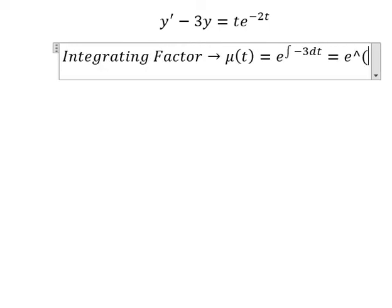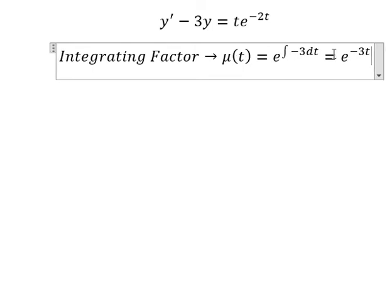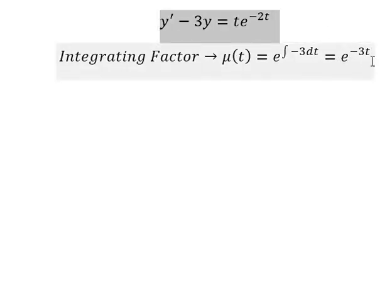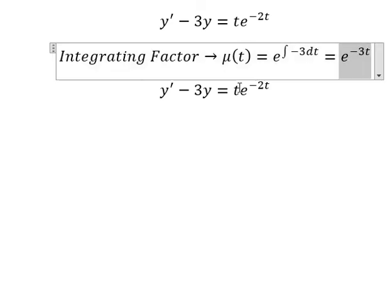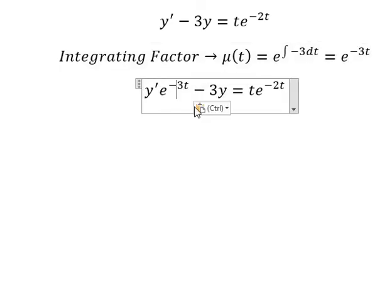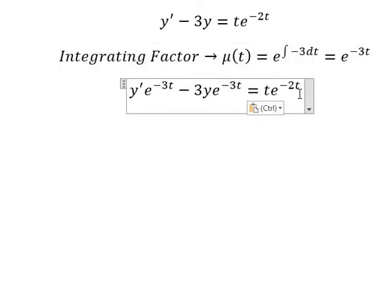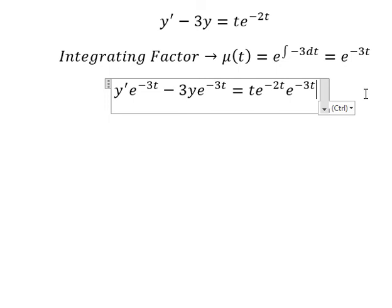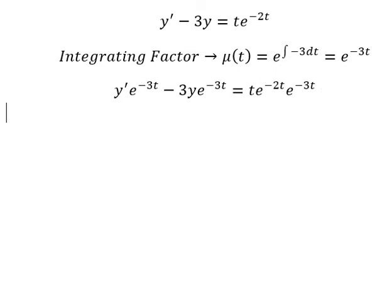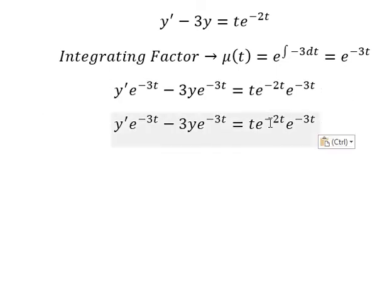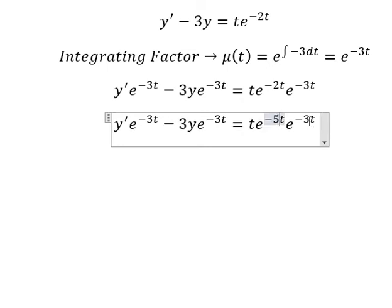We have e to the power of negative 3t, which means we multiply both sides by this integrating factor. Then negative 2t and negative 3t combine together to give us negative 5t.